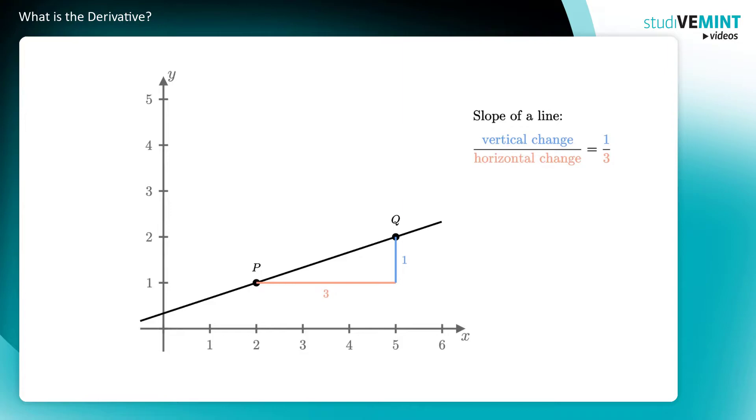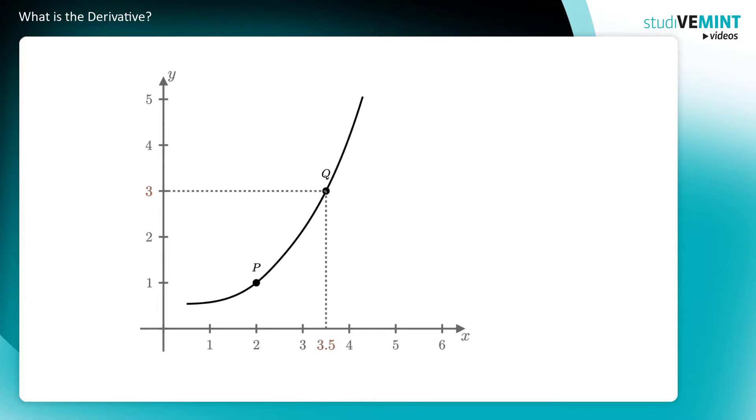But what if the function is not a straight line, but the graph looks something like this? How can you compute the slope at a given point, for example here at p(2,1)? You can try the same approach as for the straight line. Choose a second point q on the graph, for instance 3.5(3) and draw a straight line through p and q.